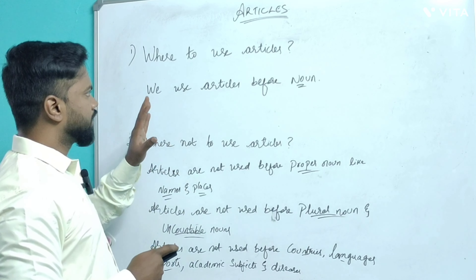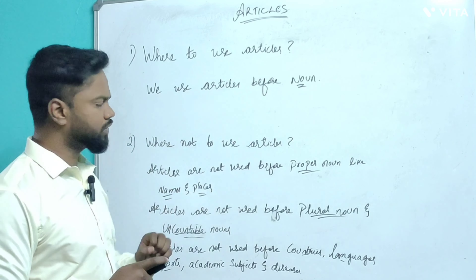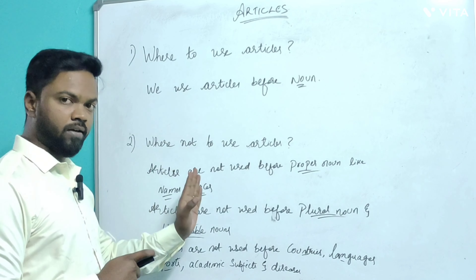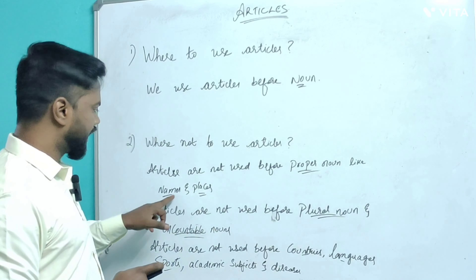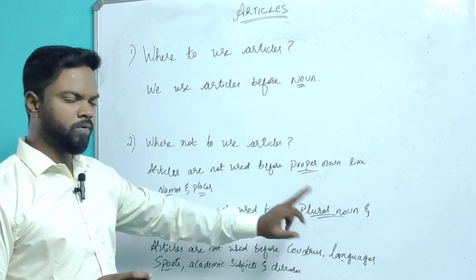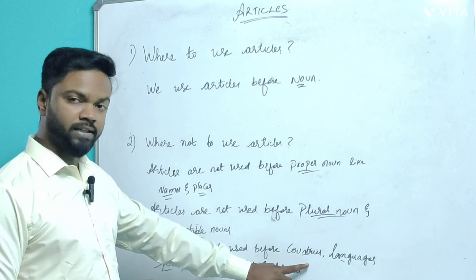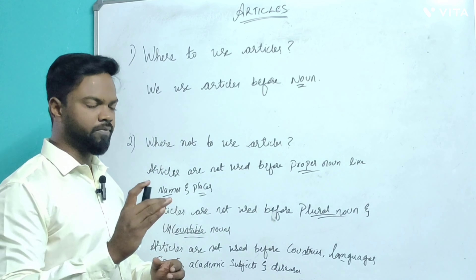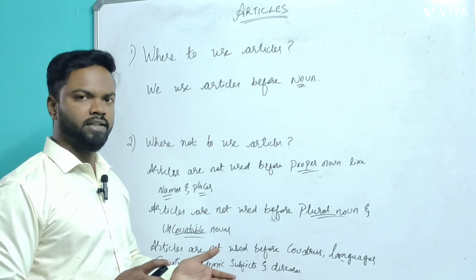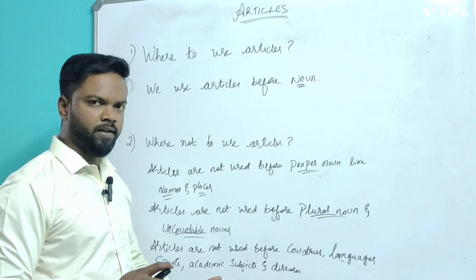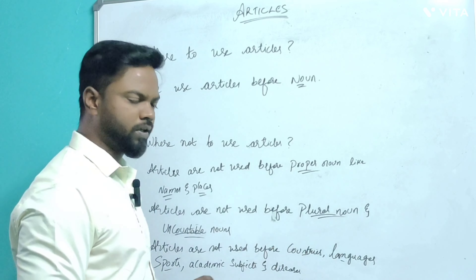So, we are supposed to use articles before nouns, and we are not supposed to use articles before: proper nouns like names and places; plural nouns and uncountable nouns; and countries — with a few exceptions. For example, countries like the United States and the Netherlands are exceptions. Apart from those, we are not supposed to use articles before countries or languages.